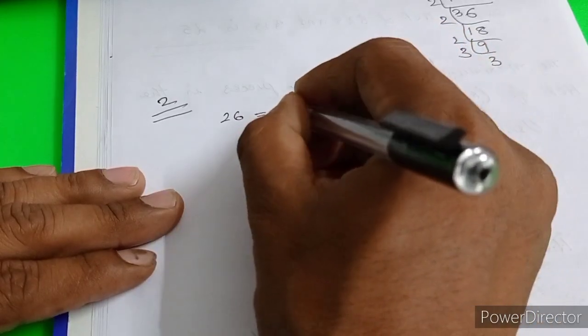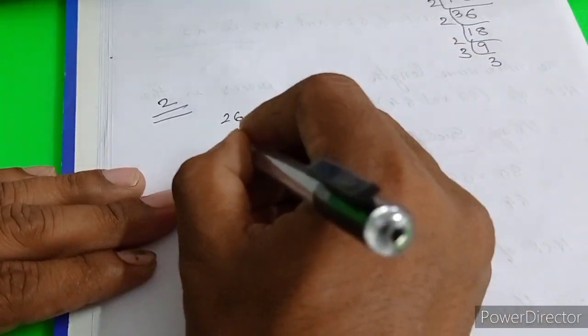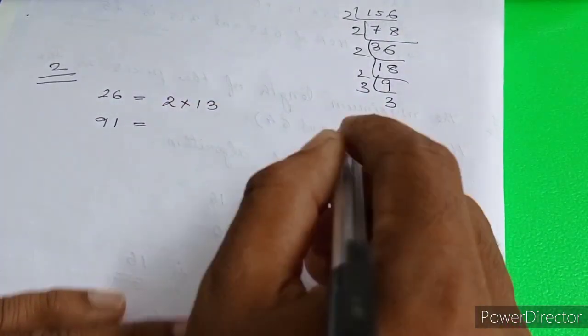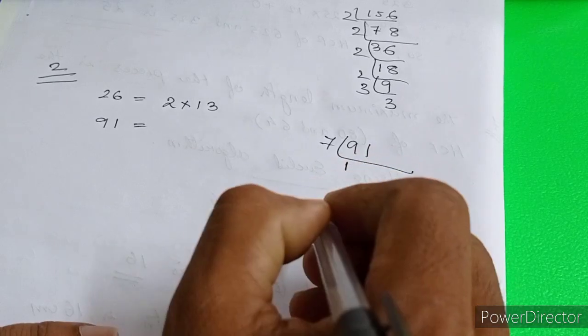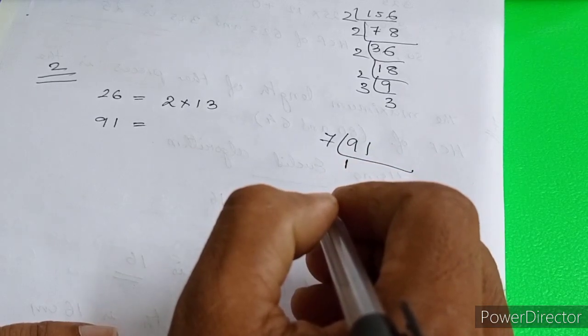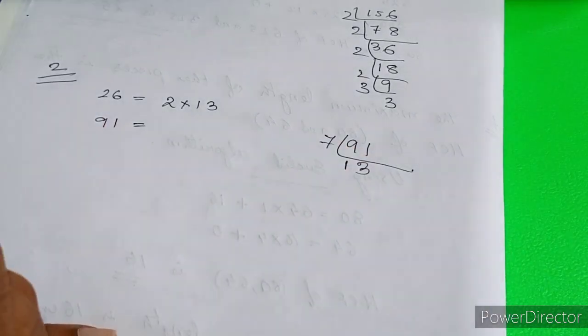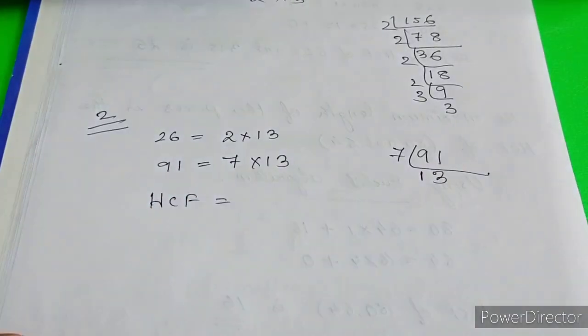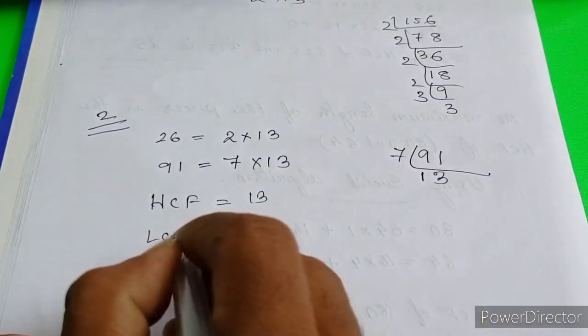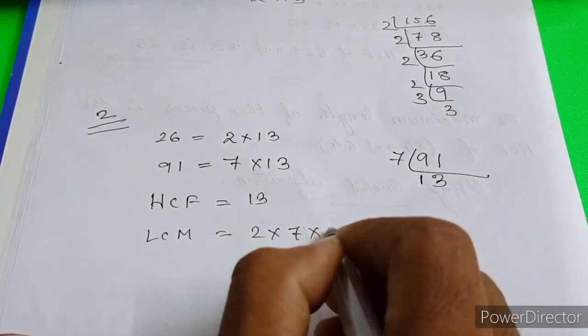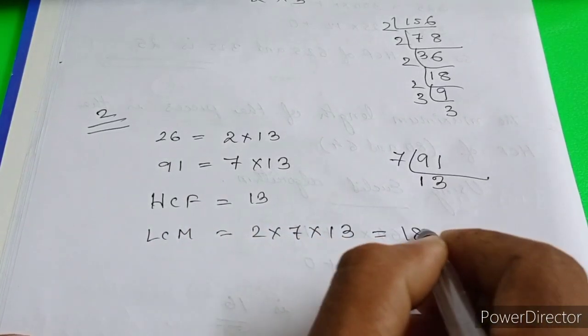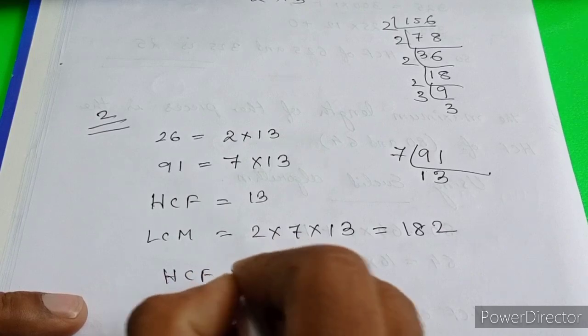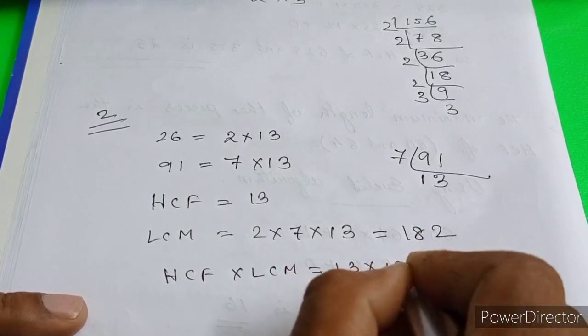26 equals 2 into 13. 91 is 7 into 13. Therefore HCF equals the common factor, 13. LCM equals 2 into 7 into 13, which is 182. Clear, we got HCF and LCM. Now HCF into LCM: 13 times 182 equals 2366.